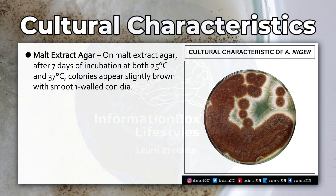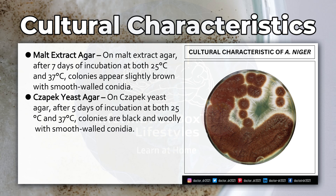On malt extract agar, after 7 days of incubation at both 25 degrees Celsius and 37 degrees Celsius, colonies appear slightly brown with smooth-walled conidia. On Czapek Yeast Agar, after 5 days of incubation at both 25 degrees Celsius and 37 degrees Celsius, colonies are black and woolly with smooth-walled conidia.